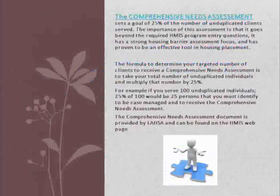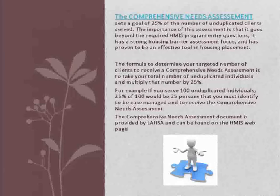The Comprehensive Needs Assessment sets a goal of 25% of the number of unduplicated clients served. The importance of this assessment is that it goes beyond the required HMIS program entry questions. It has a strong housing barrier assessment focus and has proven to be an effective tool in housing placement. The formula is to take your total number of unduplicated individuals and multiply that number by 25%. For example, if you serve 100 unduplicated individuals, 25% of 100 would be 25 persons that you must identify to be case managed and to receive the Comprehensive Needs Assessment.